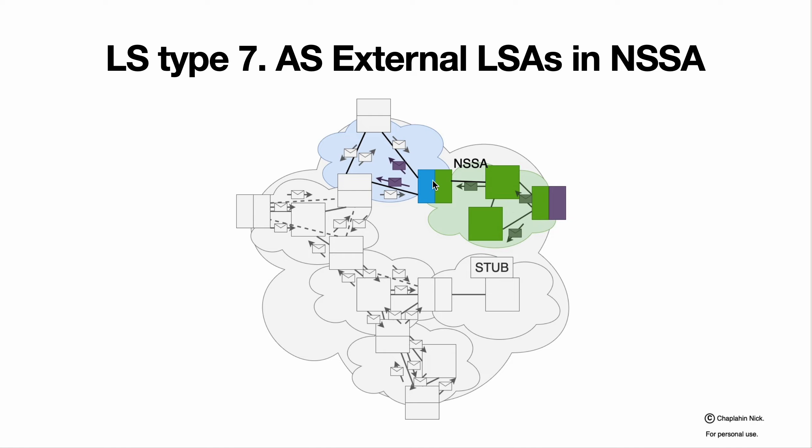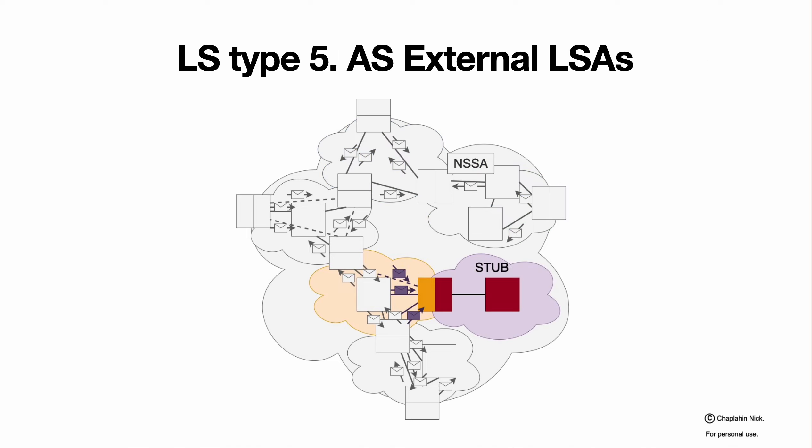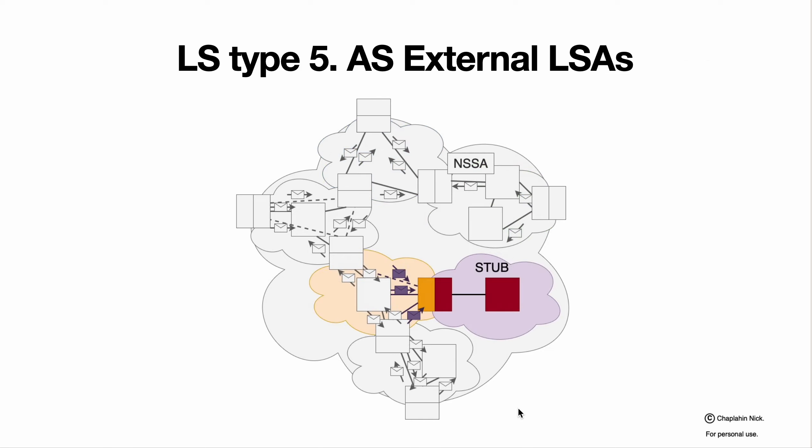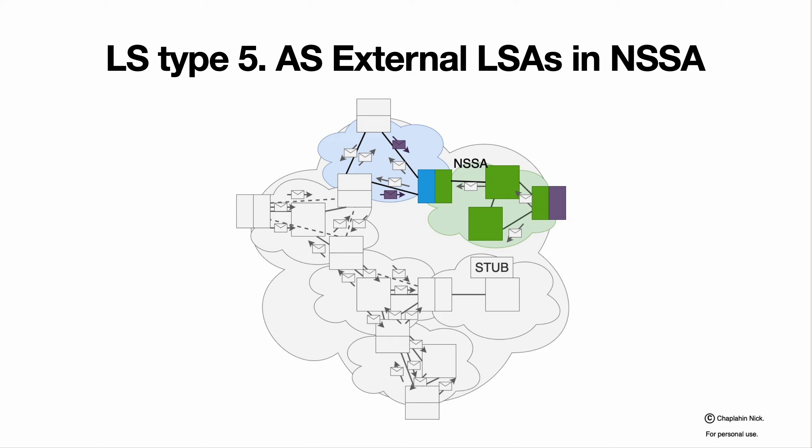When they reach not so STUB area border router, they will be transmitted to type 5 and will run as type 5. But external type 5 packets, when they reach not so STUB area border router, stopped similar to how STUB area behaves. That's one of the main differences between STUB area and not so STUB area. In STUB area external LSAs are impossible, in not so STUB area external LSAs are possible, but they are little bit different.